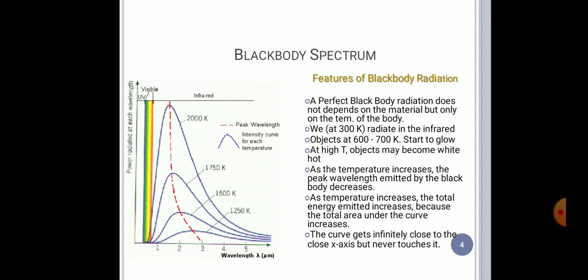In this black body spectrum, you can see different graphs for different temperatures. The intensity of radiated energy varies with temperature. As temperature increases, the intensity of emitted radiation also increases.